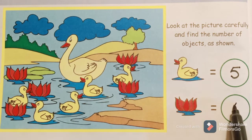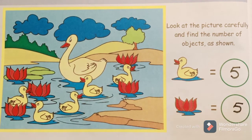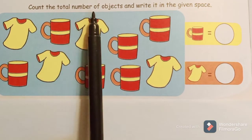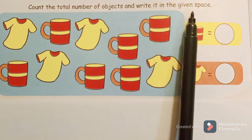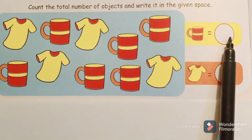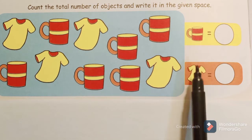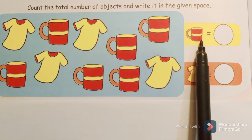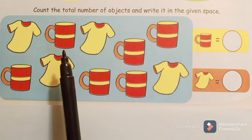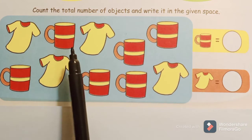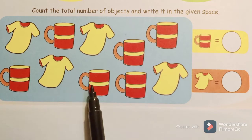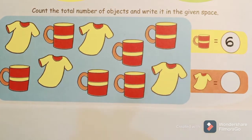Here is one more picture — there is a group of objects. We have to count the total number of objects and write it in the given space. The objects are a cup and a shirt. Let us find the total number of cups: one, two, three, four, five, six. How many cups are there? There are six cups present in this picture.